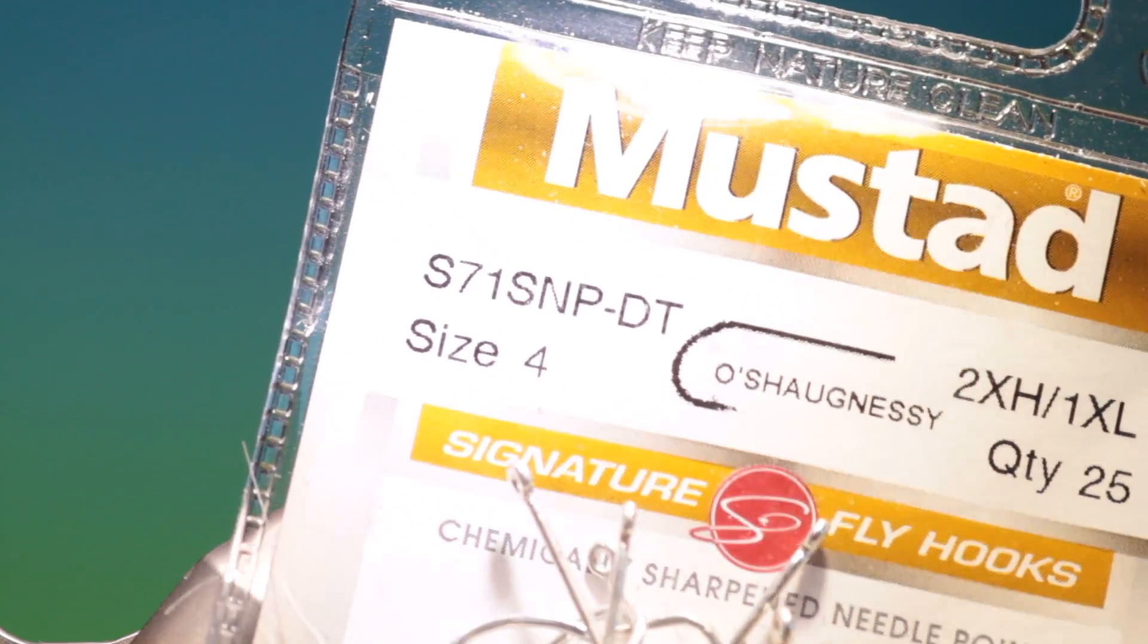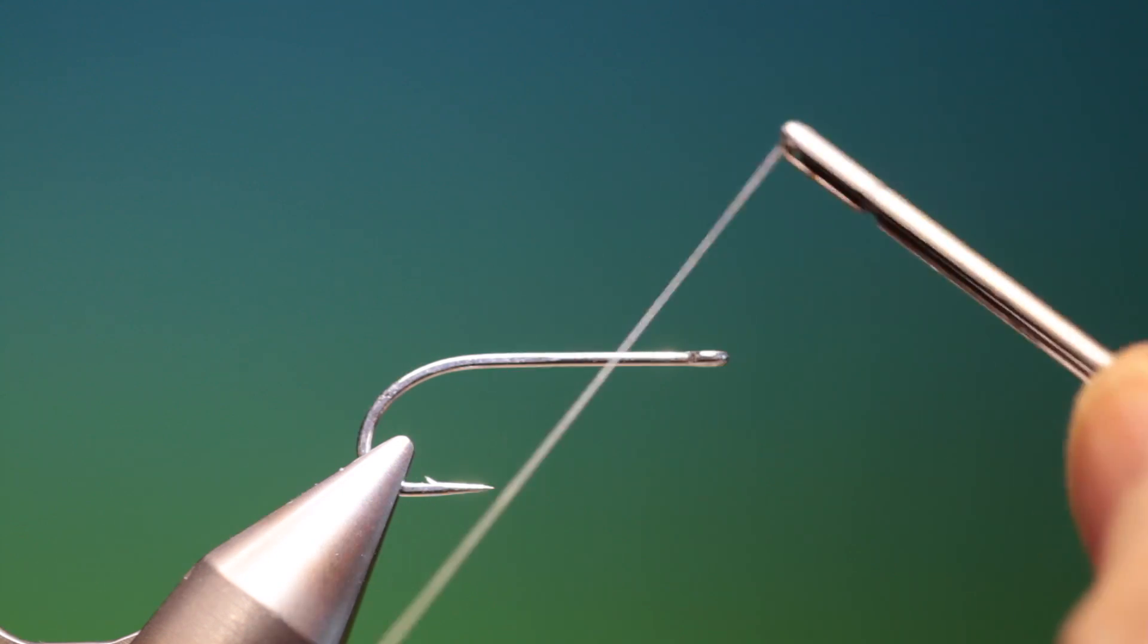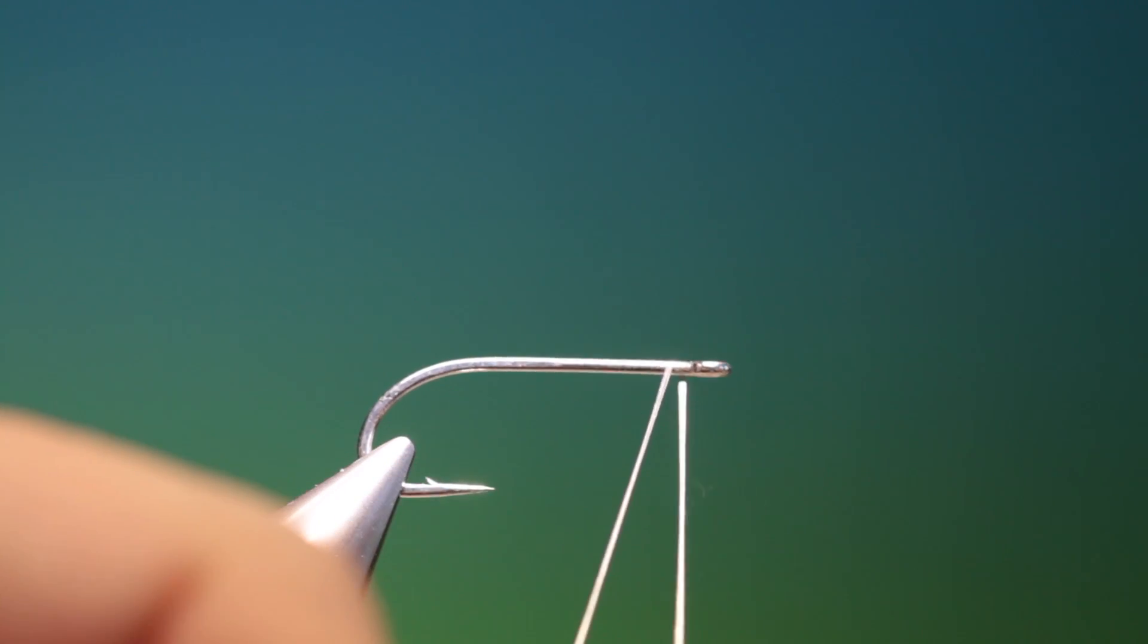We'll start with the Mustard S71 SMP size 4. This is the Crazy Charlie, probably the most famous bonefish fly.